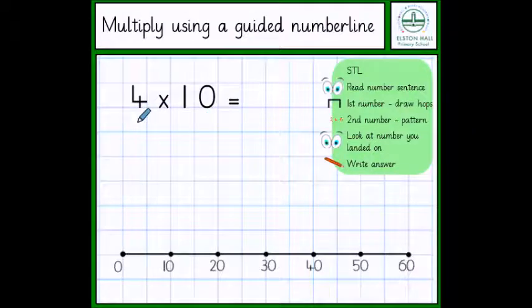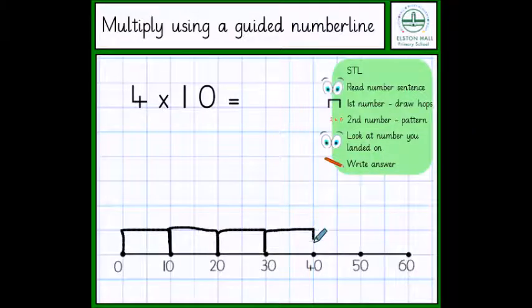This first number tells you how many hops we need to draw onto our number line, which is 4. So I start at 0 and I draw 4 hops. 1, 2, 3, 4.